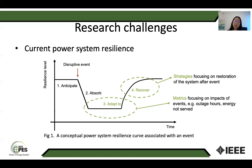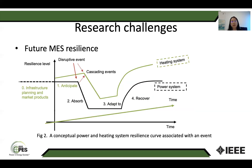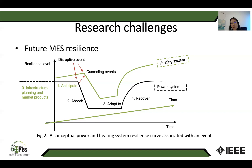Currently, the state-of-the-art study was focused on building metrics for phase three and phase four. For future multi-energy system resilience, we need to focus more on phase zero — infrastructure planning and market products — which means enforcing or renovating existing infrastructures or planning new components to enhance infrastructure resilience. We can also develop new market products or business models to motivate stakeholders to support resilience. We also need to focus more on the anticipate phase one, where the system operator can have a short-term prediction of extreme events such as natural disasters before they happen, enabling resilience enhancement before the event occurs.